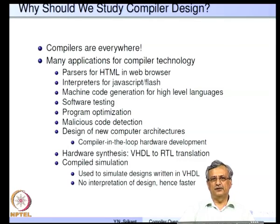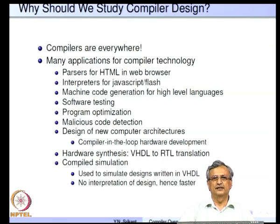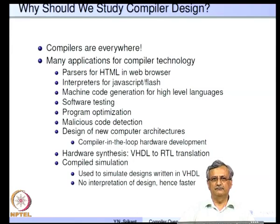For the compiler itself we require machine code generation, and for high-level languages whenever we need code generation we need to use compiler technology. Apart from that it has uses in software engineering as well — for example, software testing, program optimization, security domain malicious code detection, and design of new computer architectures.